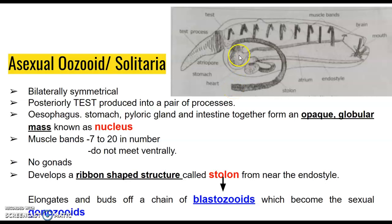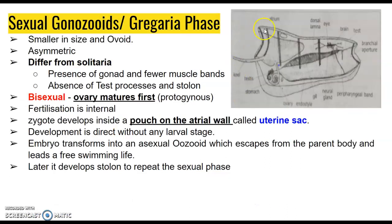The stolon develops near the endostyle and as the organism grows, it also increases in size. They bud off and break into small blastozoids, which gradually become the sexual gonozooids. In the case of the sexual gonozooids in the gregarious phase, compared to the solitary phase, these are smaller in size, more ovoid and asymmetric in nature, and they possess gonads — both testes and ovary.